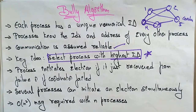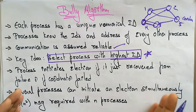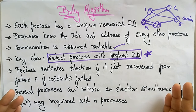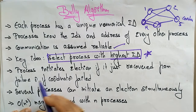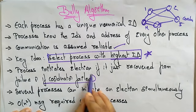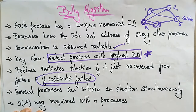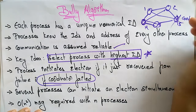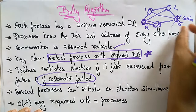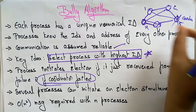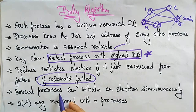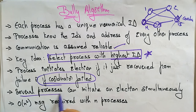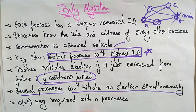A process initiates an election if it has just recovered from failure or if the coordinator has failed — similar to how a new leader is elected when a chief minister or prime minister resigns. Any process that recognizes the failed coordinator can initiate the election. Several processes can also initiate elections simultaneously. The algorithm requires on the order of N-squared messages with N processes.